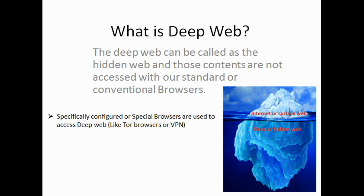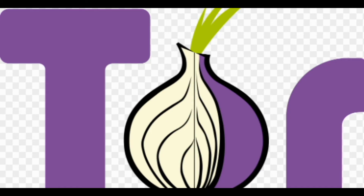What you see under the water is a massive formation of ice — that we can compare to our deep web. Also, if you notice, deep web users are impossible to trace, because they are using an onion router protocol in order to exchange information.